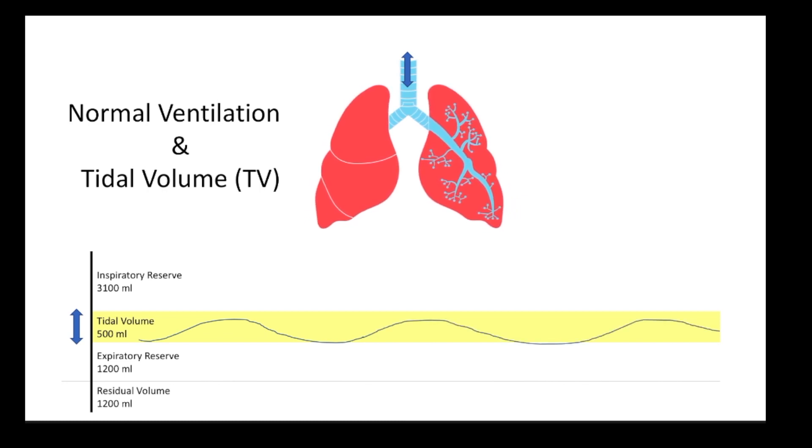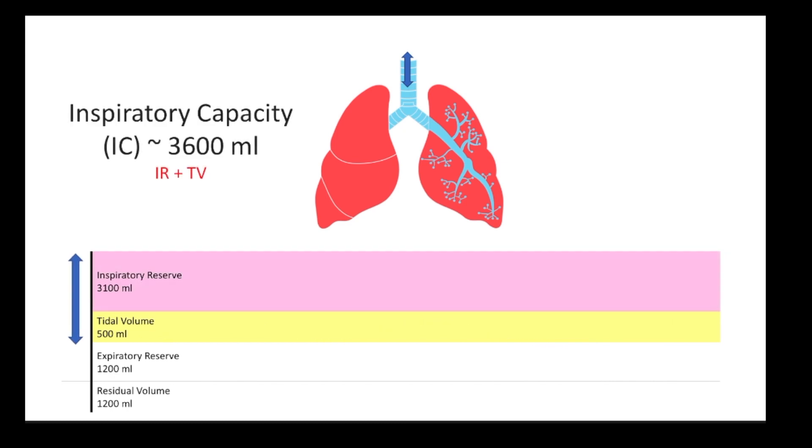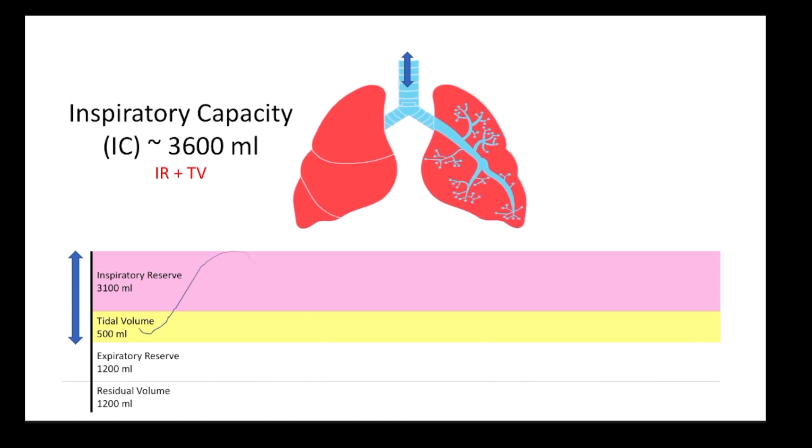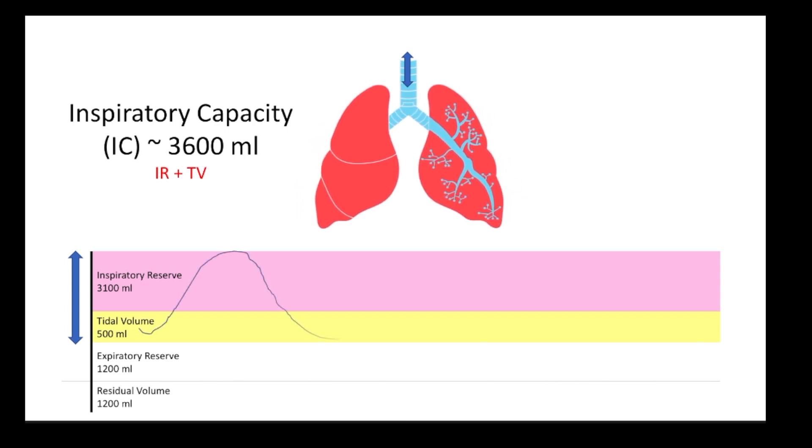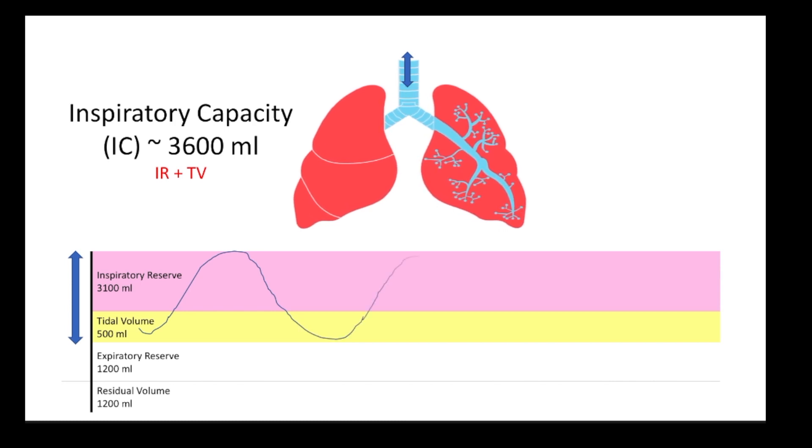We're going to start with the inspiratory capacity. This is the sum of your tidal volume and inspiratory reserve volume. So from a normal exhalation state you take in the biggest breath that you can and then exhale back to baseline. This is approximately 3600 mils in a healthy adult.